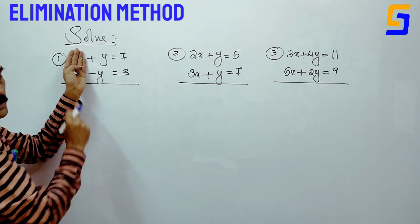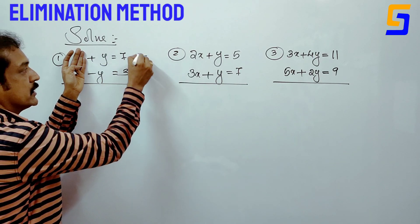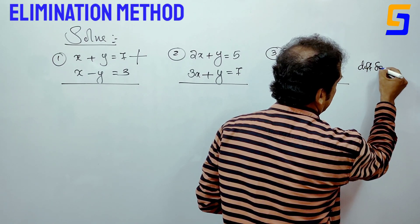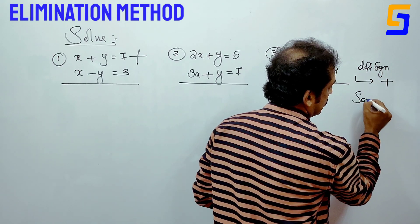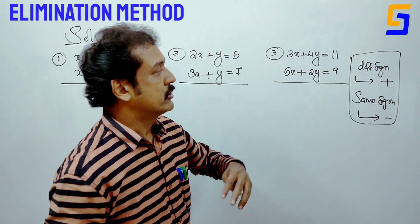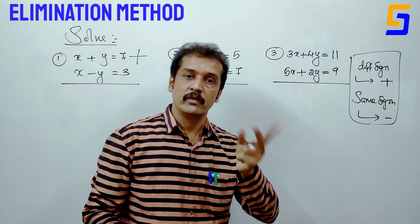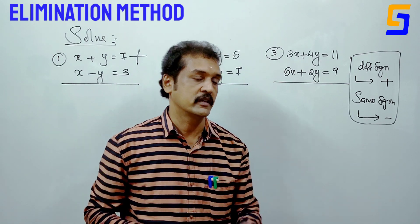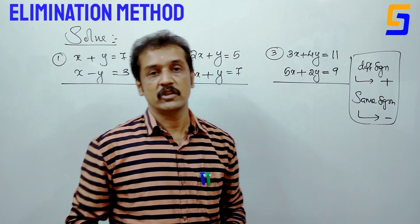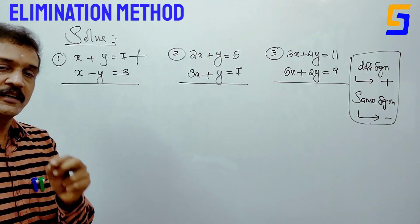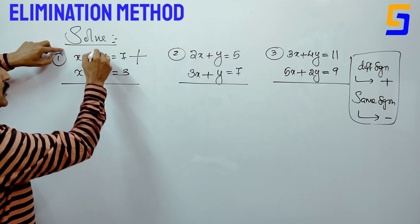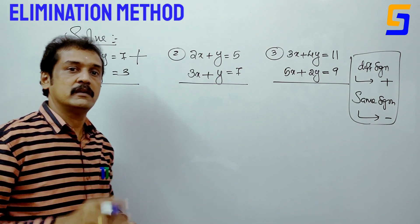The sign of y: different signs mean you add — plus y and minus y cancel out — that is elimination. Same sign means you subtract. Different sign will be added, same sign will be subtracted. This clue is what you will use. Plus y, minus y — different sign — that is elimination.